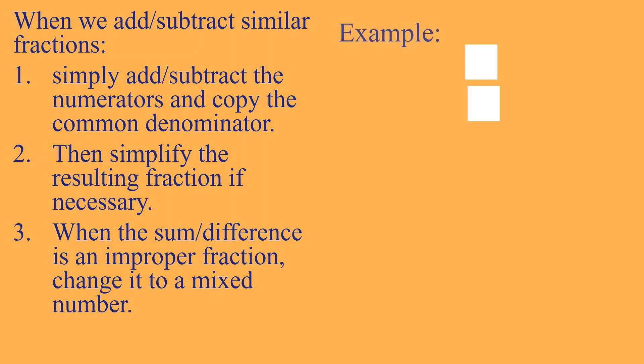Let us have an example. First, we have 2 over 7 plus 4 over 7. So, susundin natin isa-isa yung steps. First, simply add the numerators. So, yung numerators ay 2 at saka 4. So, 2 plus 4 is 6. And then, copy the common denominator which is 7. So, 6 over 7. Simplify pa ba natin? Hindi na. Kasi yung 6 over 7 ay nasa simplest form na. Therefore, that is our final answer.